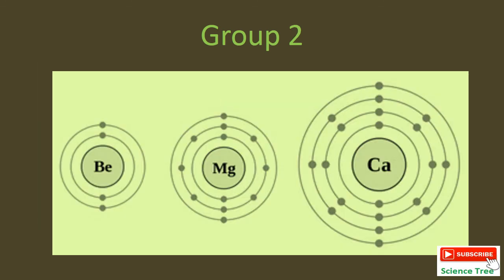Similarly, in group 2: beryllium has atomic number 4, magnesium has atomic number 12, and calcium has atomic number 20. As the number of electrons increases with intervals, more shells are added to accommodate them, and increasing the number of shells means the shielding effect increases. In summary: moving from left to right in a period, shielding effect remains the same while effective nuclear charge increases. Moving from top to bottom in a group, shielding effect increases while effective nuclear charge decreases, because the outermost electrons move further away from the nucleus.